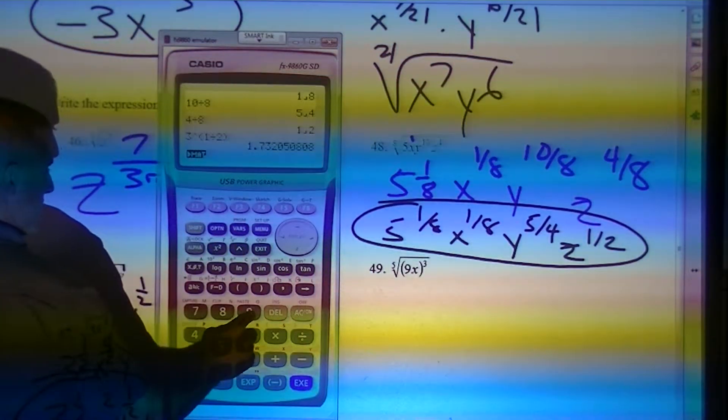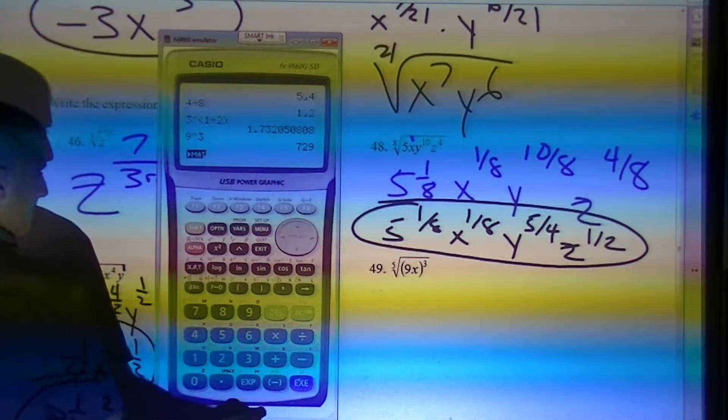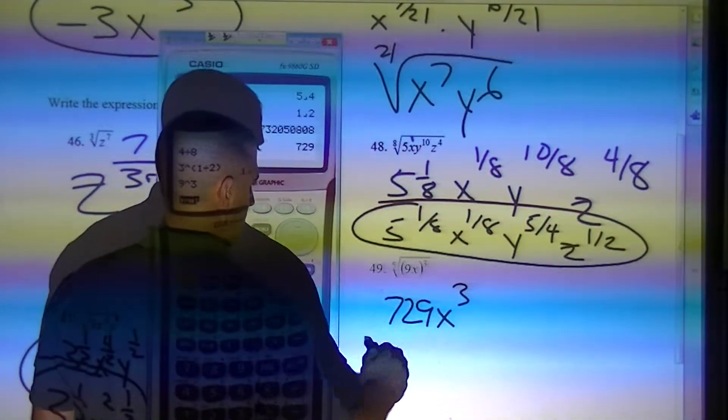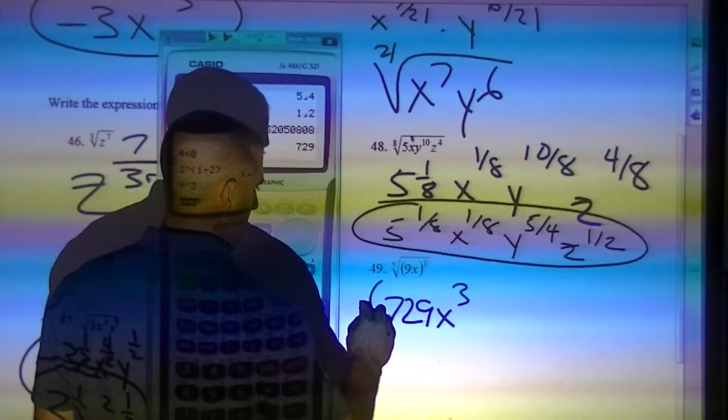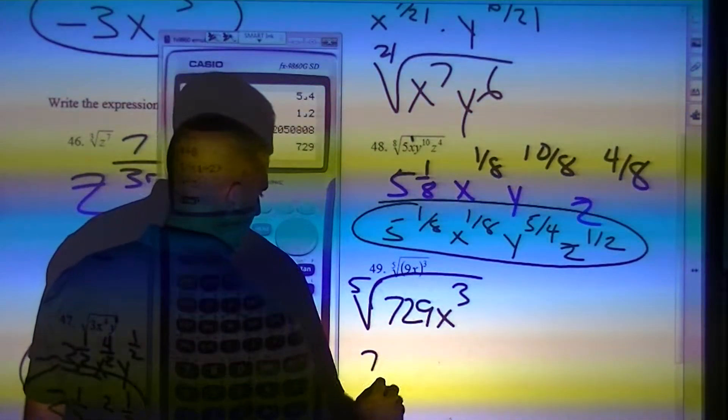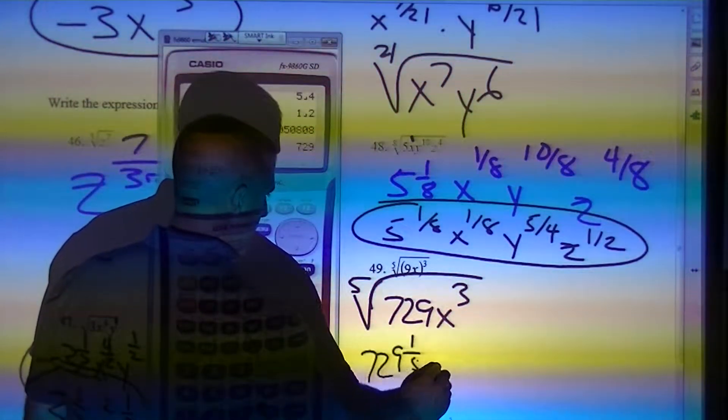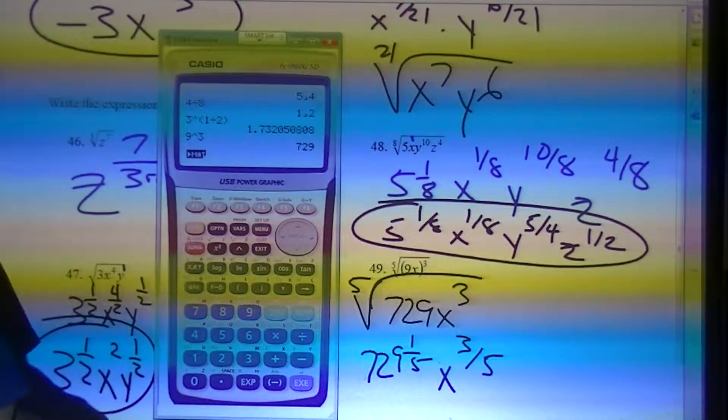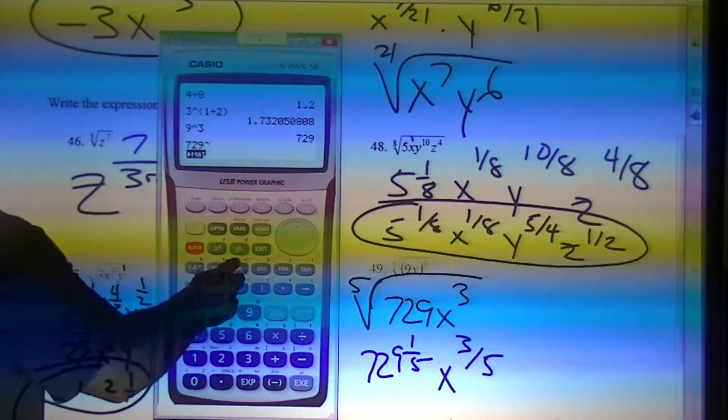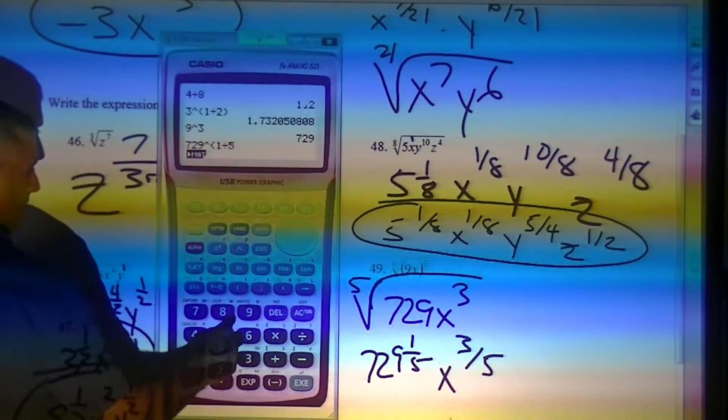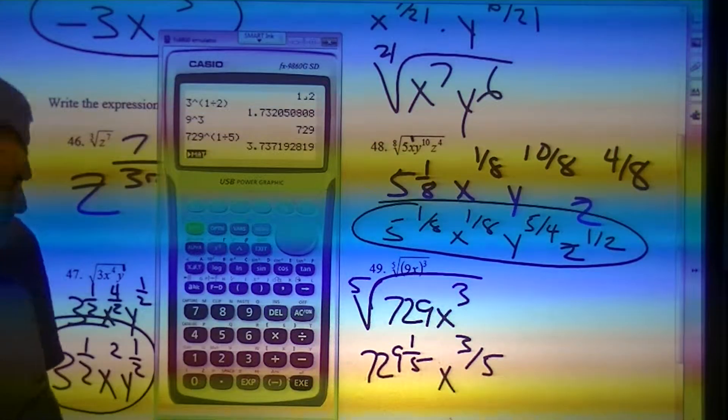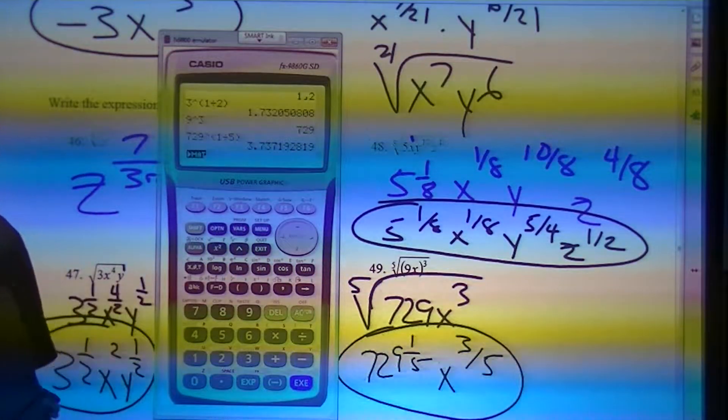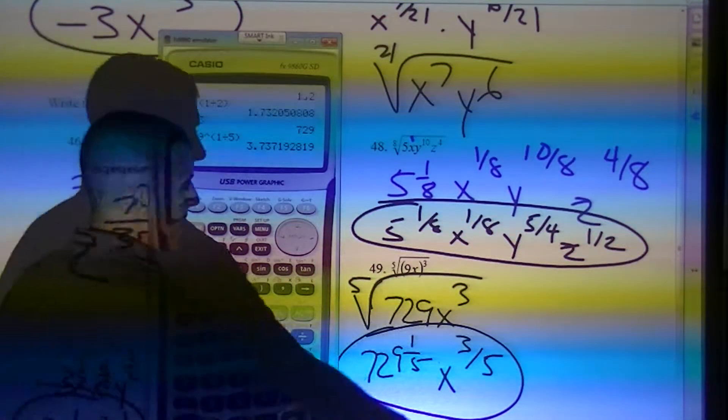Now, what I would do here is go ahead and cube 9. Make that easy. So that's 729, x cubed. And then you can do the 5th power. So that's 729 to the 1 fifth, x to the 3 fifths. So 729 to the 1 fifth power, and that gives me, nope, nothing nice. And that will reduce even 3 fifths or 9 fifths. I think that's it for that page.